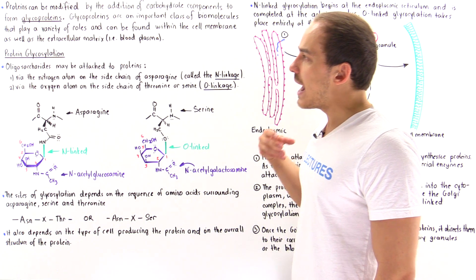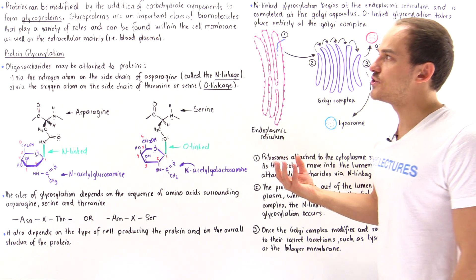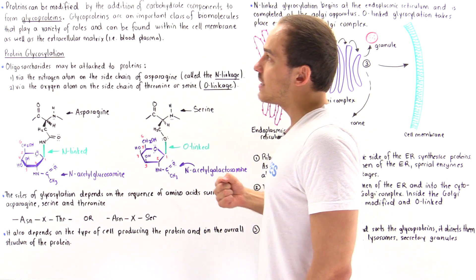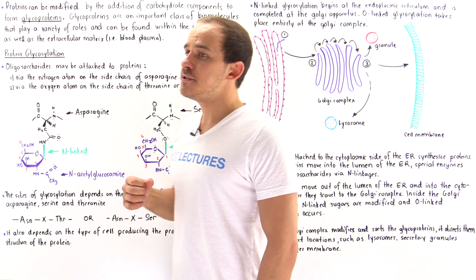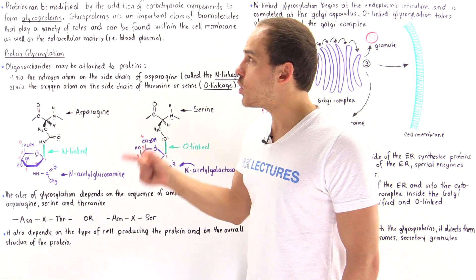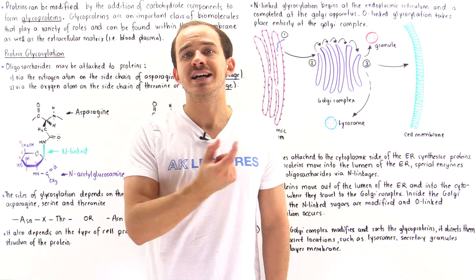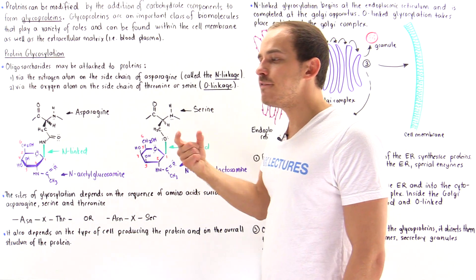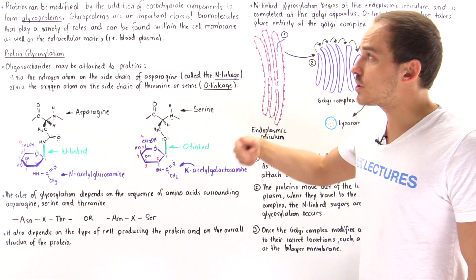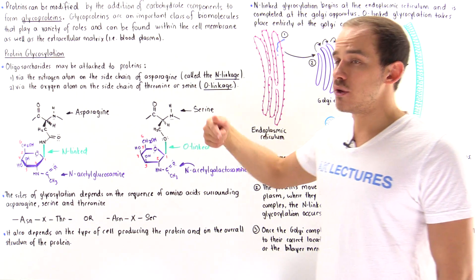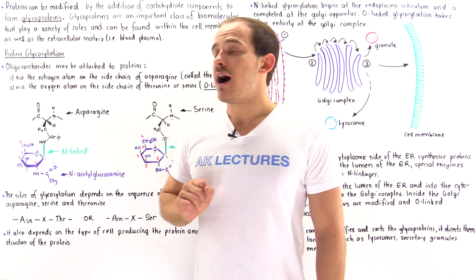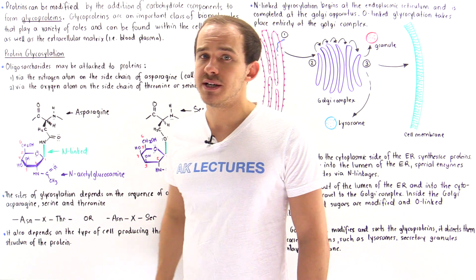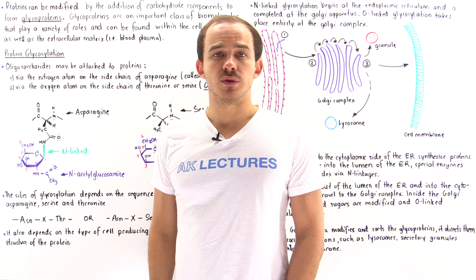Glycoproteins are a very important class of biological molecules, consisting of a protein component as well as a carbohydrate component. By modifying and adding the sugar component onto the protein, we increase the functionality and change the properties of the protein molecules.